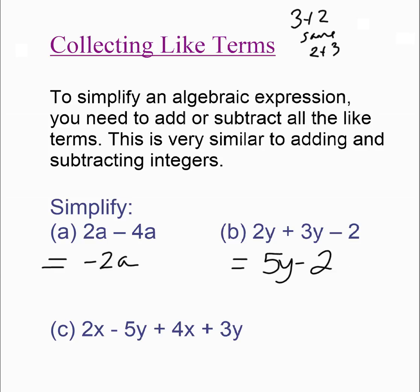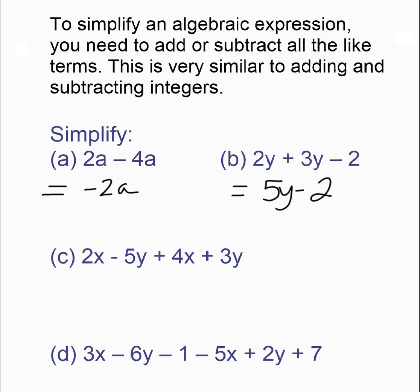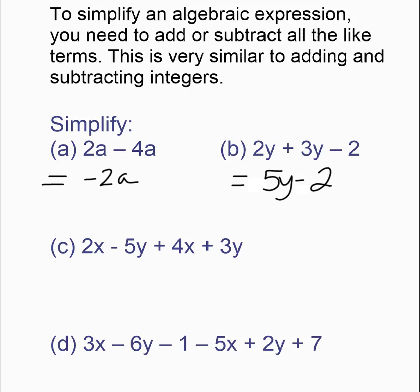You cannot keep going — that is your final answer. Because the 5y term has a y and the constant 2 does not. So these are not like terms and you are done. The next one is a little bit more challenging. What you have to do is collect the like terms yourself.